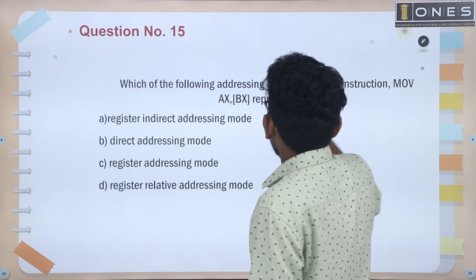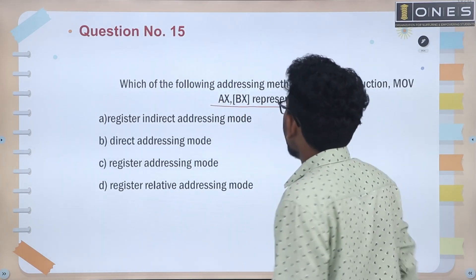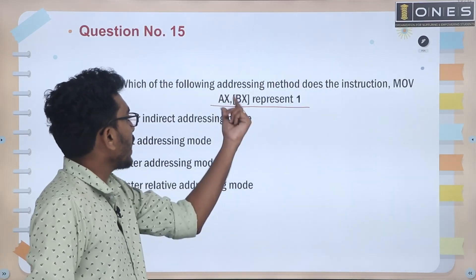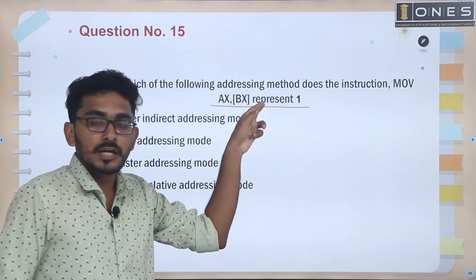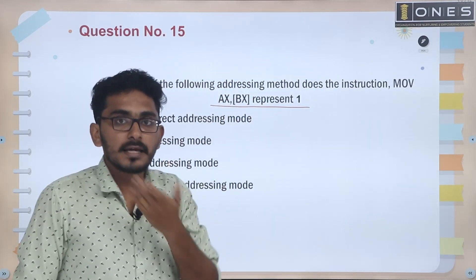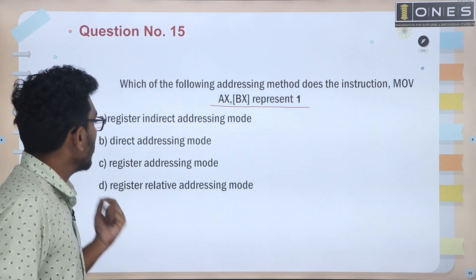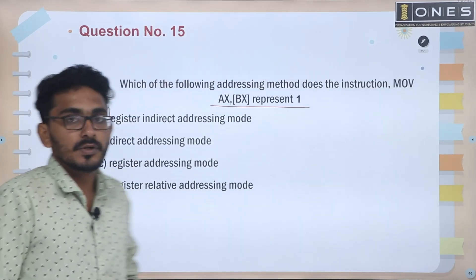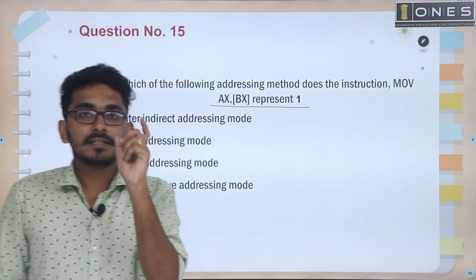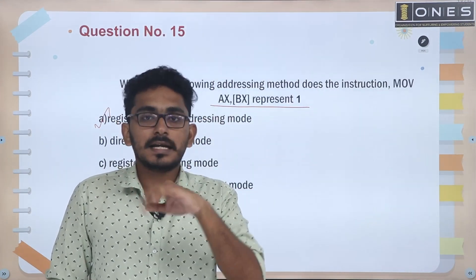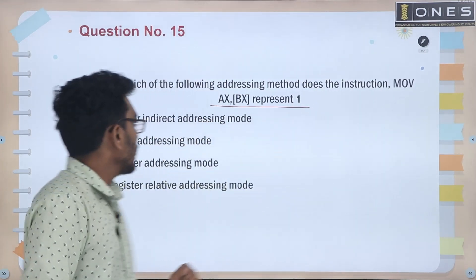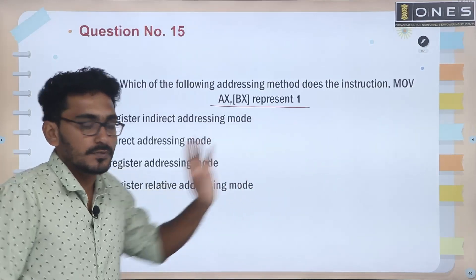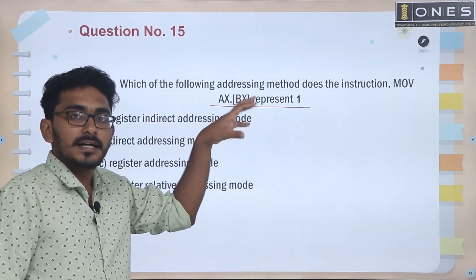Next question: Which of the following addressing modes does the instruction MOV AX, BX represent? In this mode, both AX and BX are register names. This refers to the register indirect addressing mode, where registers hold the address.